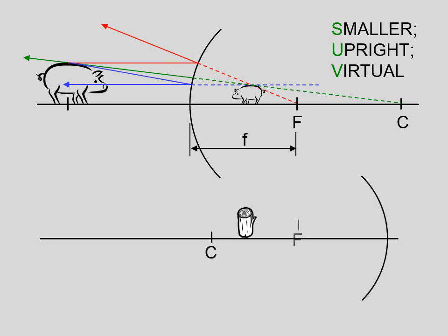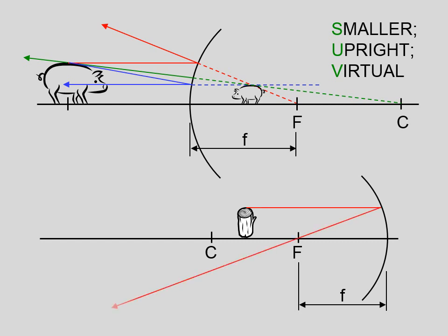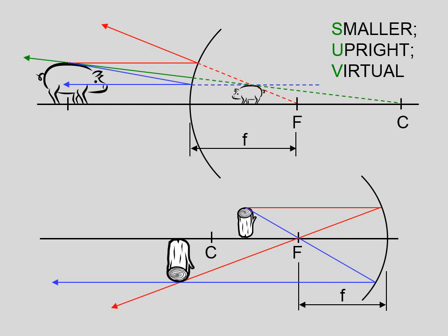Now with a concave mirror example: rule number one says go parallel to the principal axis, reflect through the focal point. Rule number two says go through the focal point, reflect parallel to the principal axis. Then examine the reflected rays — you can see that those intersect right there. Where those rays intersect corresponds to the top of the object, which means this is going to be an inverted real image.